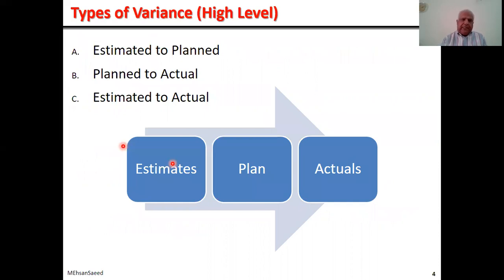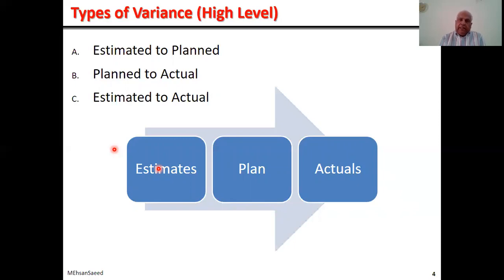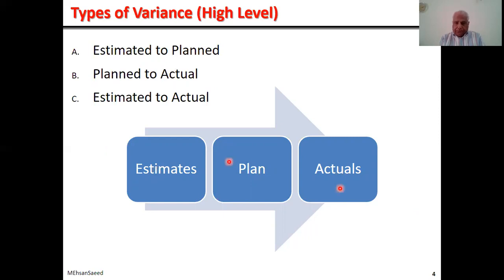When it comes to project data, time-wise, it can essentially pertain to three phases: the estimates, which are usually done during feasibility study or certainly by the time the project charter is signed and issued; then the planned data; and the actual data. Therefore, it is reasonable to expect for any project manager or monitoring and control officer to compare the data at various stages — comparing estimated to planned, planned to actual, or estimated to actual. Therefore, we have essentially three types of variance.